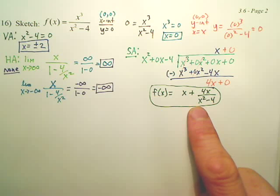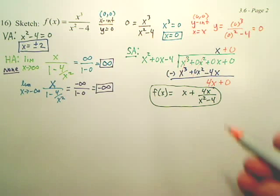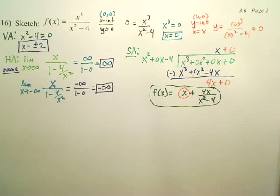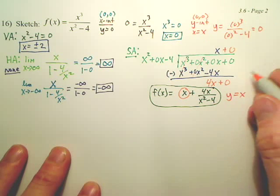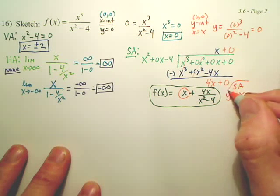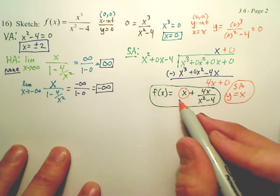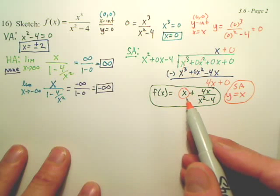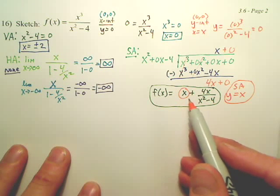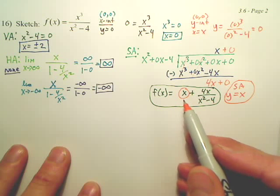What's useful about this form is that right there. It's kind of weird. But this right here is your slant asymptote. Your slant asymptote is basically y equals x. That's your slant asymptote. Whatever this is in front is your slant asymptote. If what was in front was x plus 3, your slant asymptote would be x plus 3. If what's in front is 3x minus 5, your slant asymptote is 3x minus 5.